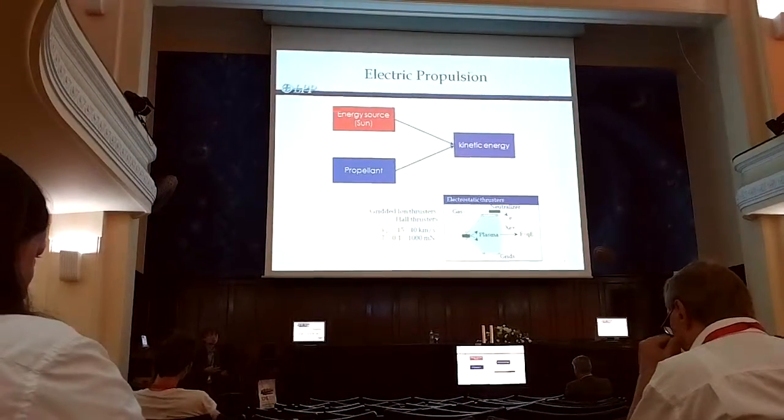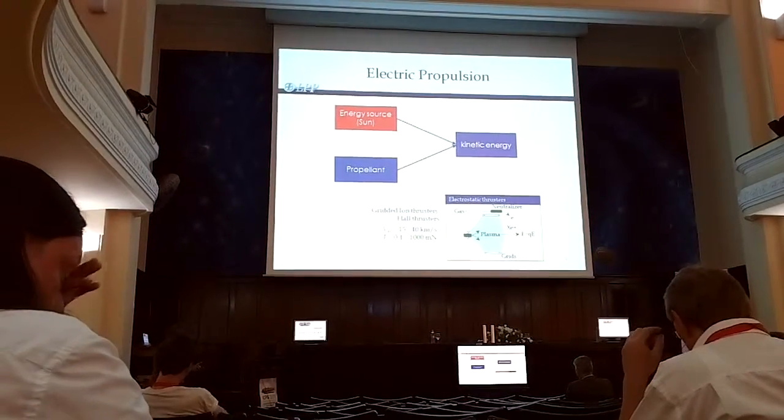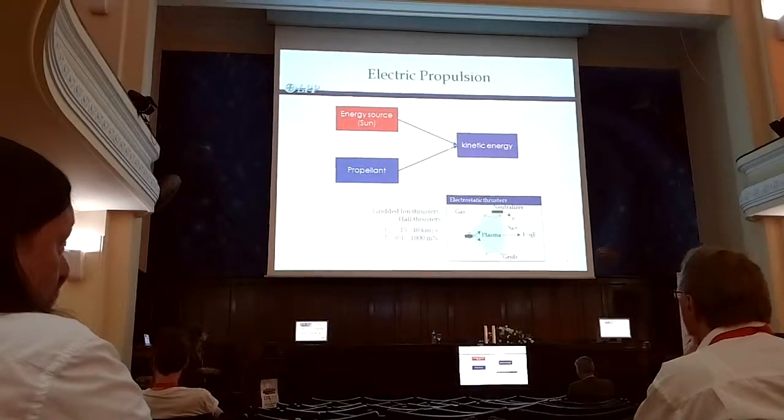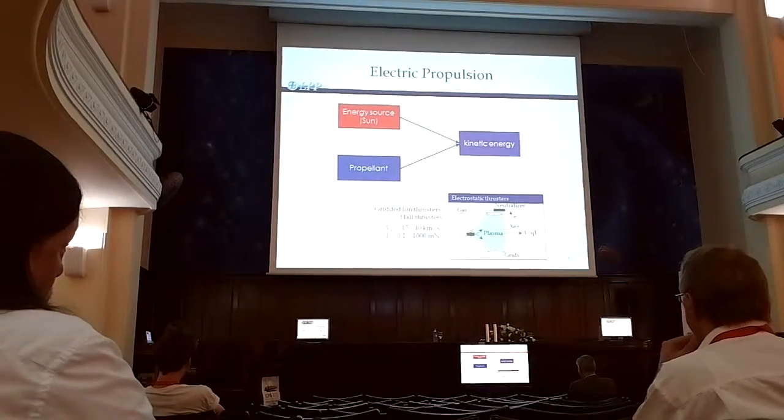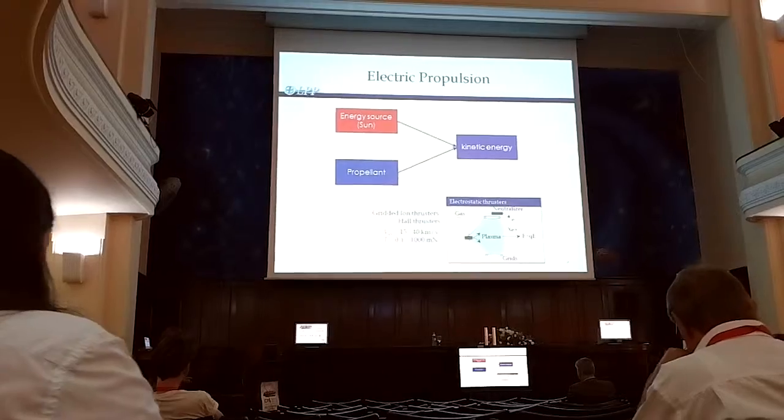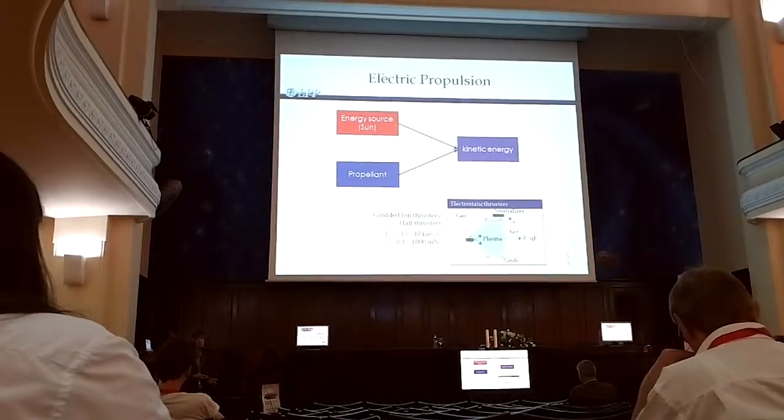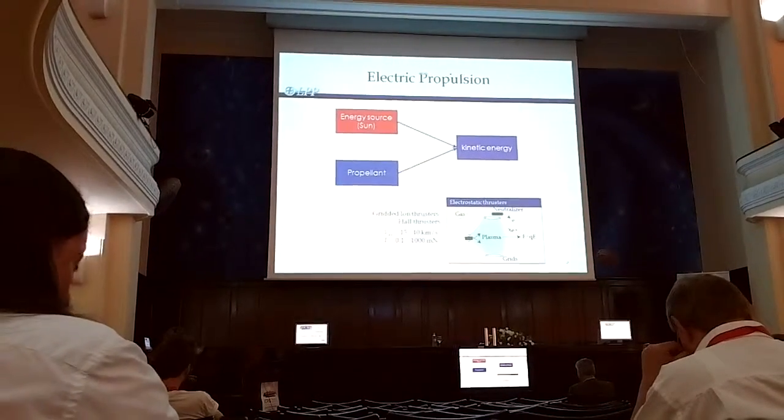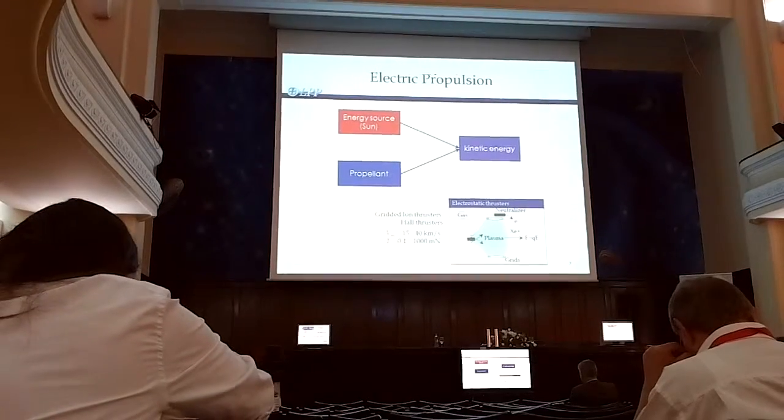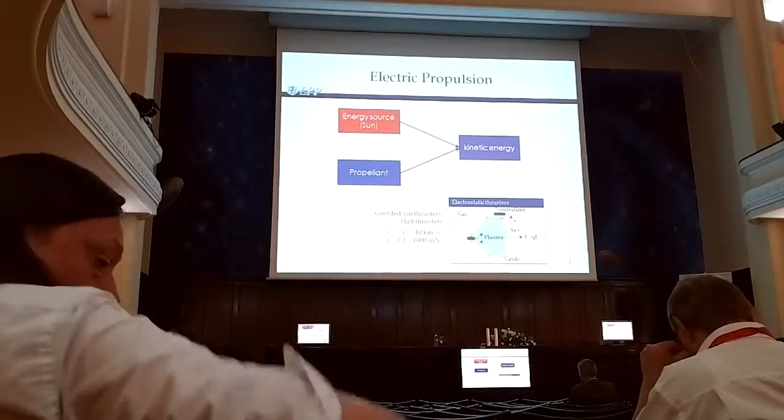Basically, the plasma propulsion is part of the big family called electric propulsion systems, where the aim is to have a propellant, to have energy source, electrical energy basically, it can be energy from Sun, and combine it together to have directed kinetic energy. And like that we generate thrust.